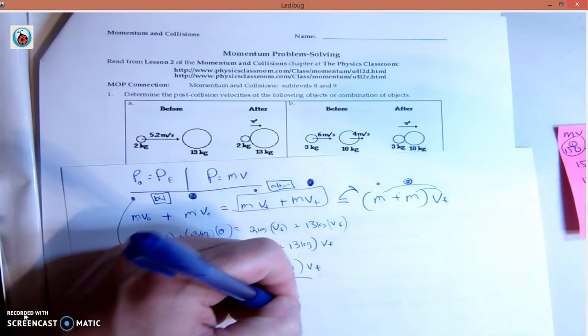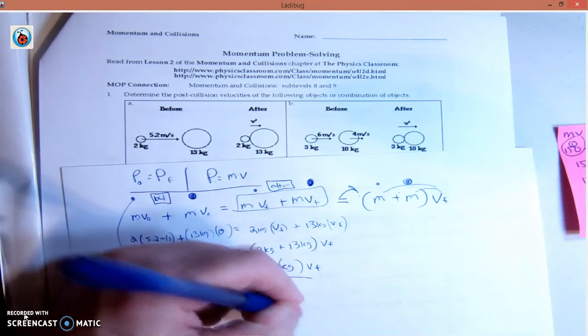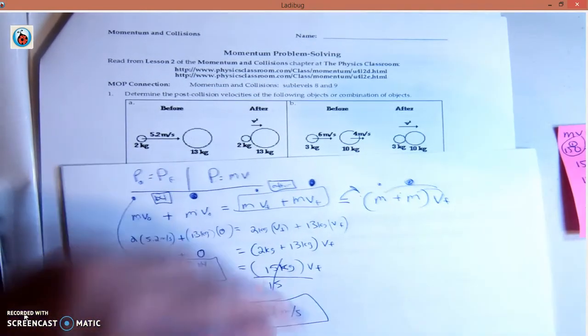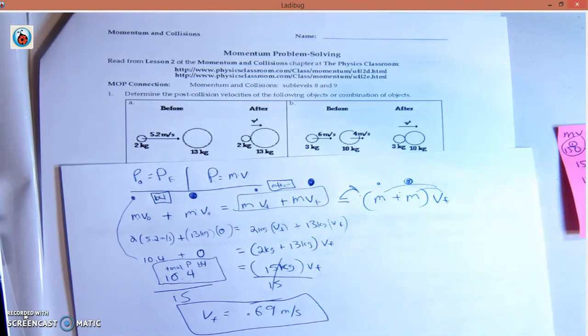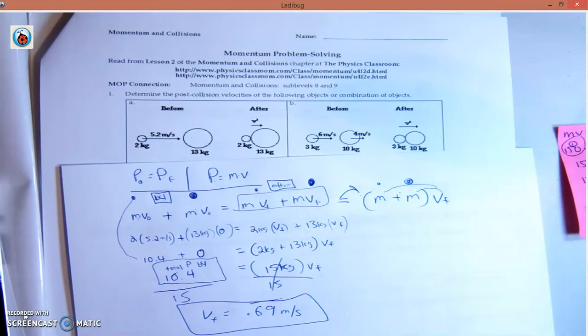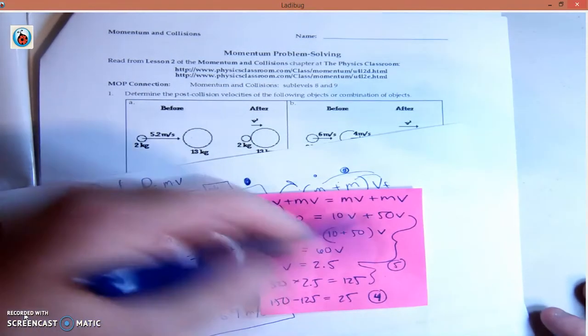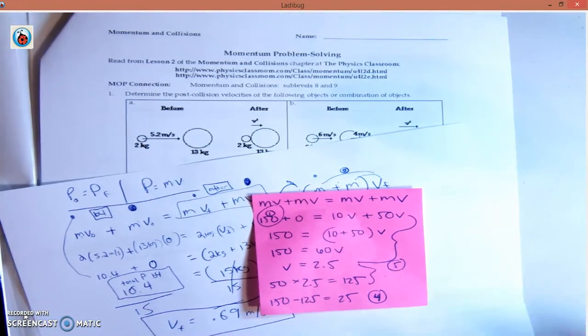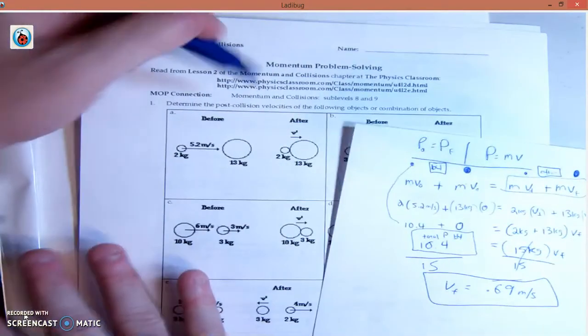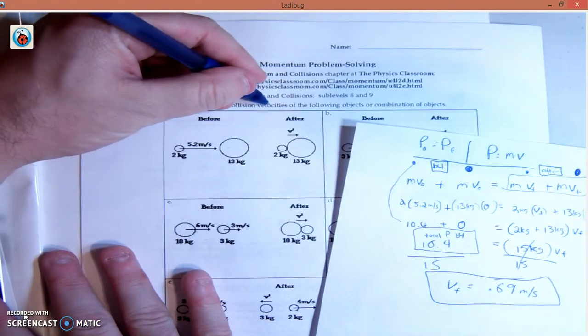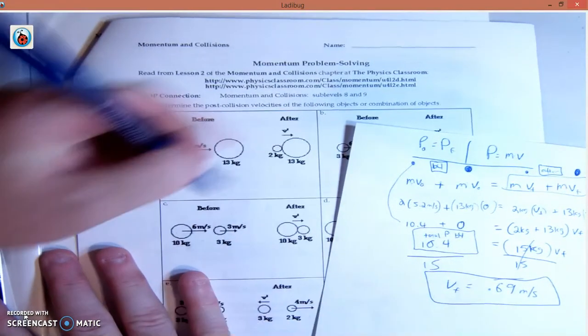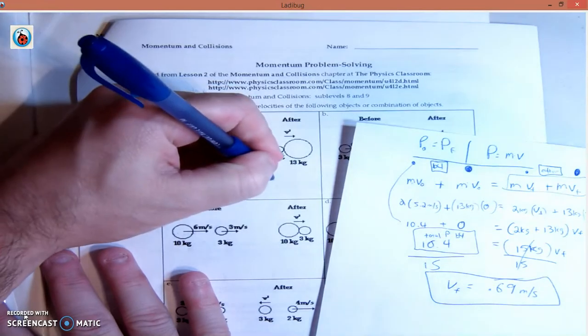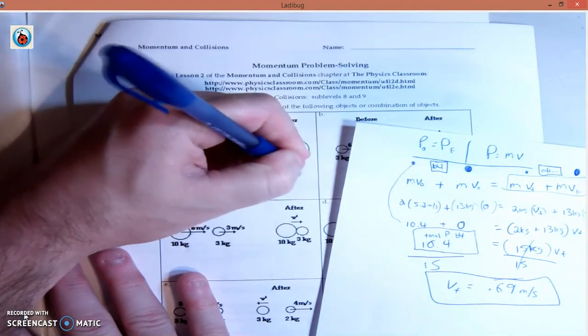It's meters per second. So this is awesome because we don't have to do all that extra stuff from the first problem. All they want is velocity. So we're pretty much done. The post-collision velocity is 0.69 meters per second.